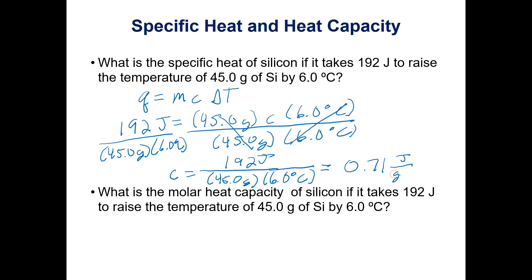The units cancel to joules per gram degree Celsius, which are exactly the units for specific heat. So our final answer is that the specific heat of silicon is 0.71 joules per gram degree Celsius.